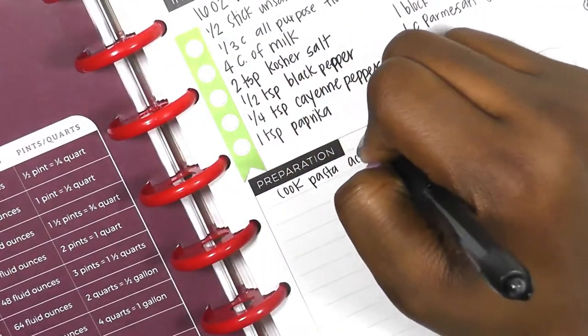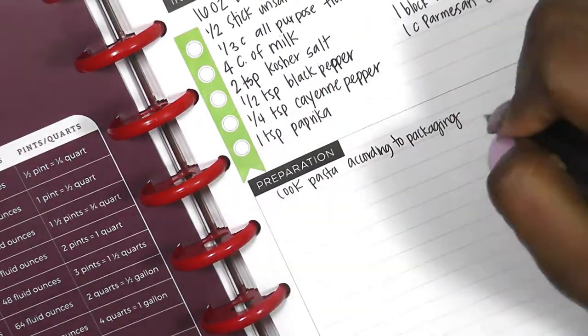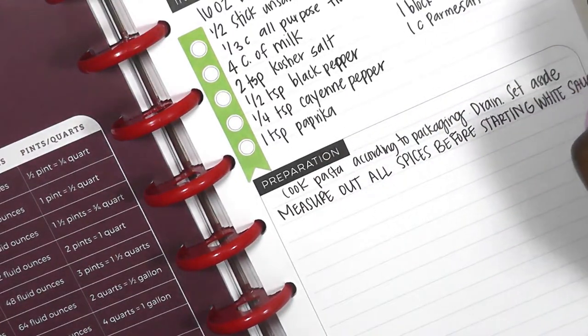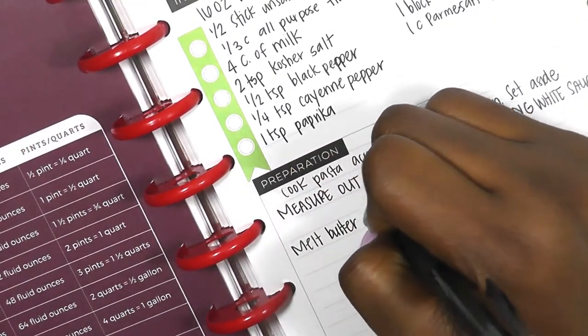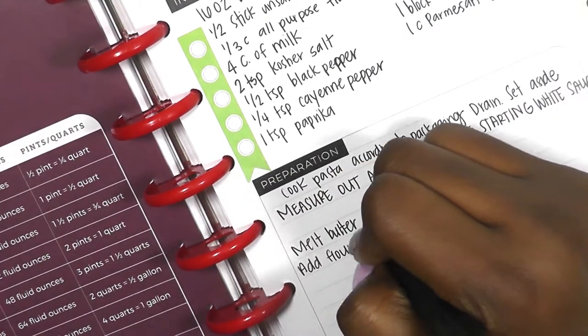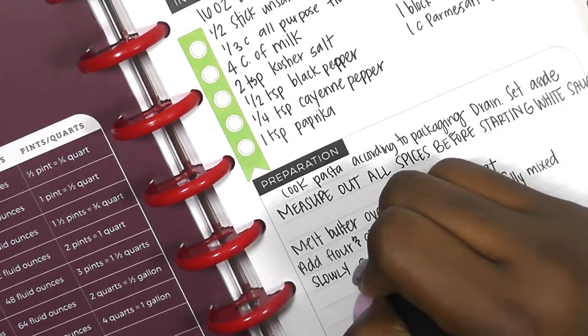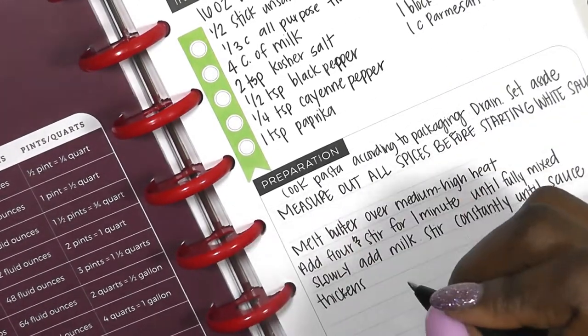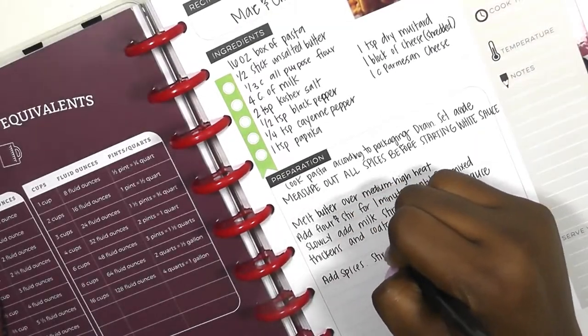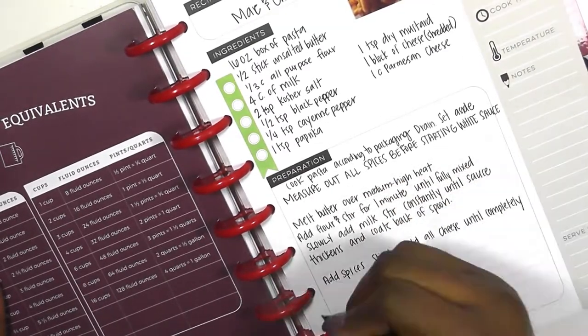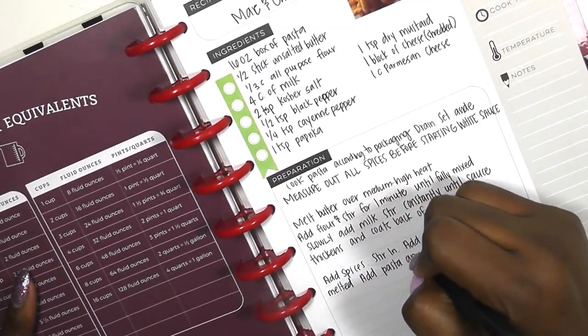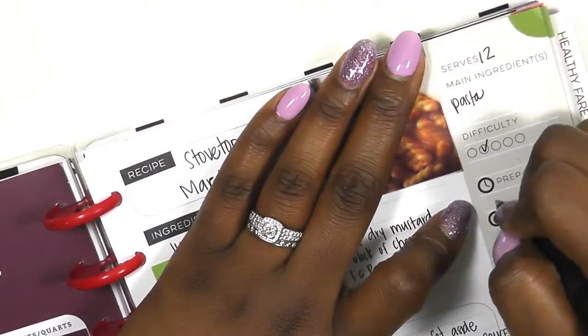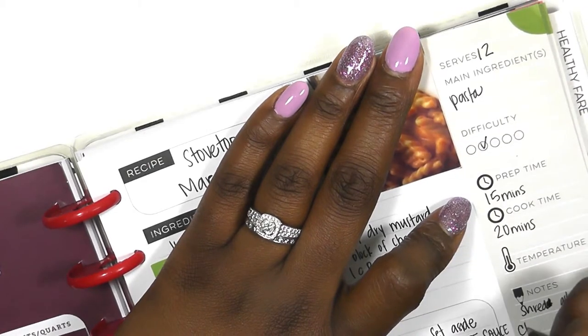So after I put the ingredients, I always write down the instructions, and sometimes I will put things in uppercase so that it'll stand out for me. Just because I've made the meal already and if I've made any mistakes or anything turned out bad, I want to make sure that it doesn't happen again. And I try to put spaces in between each of those instructions. Then I put how many it serves and fill in the sidebar.